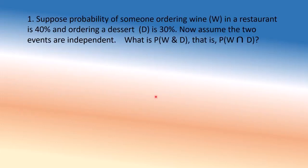Suppose the probability of someone ordering wine in a restaurant is 40% and dessert is 30%. Assume the two are independent. That means people who order dessert are totally independent of whether they order wine or not — it's 30% throughout the restaurant regardless.